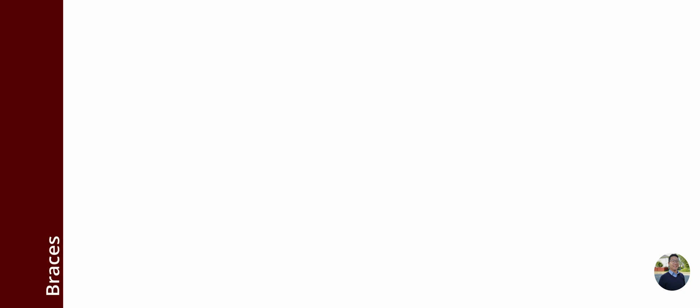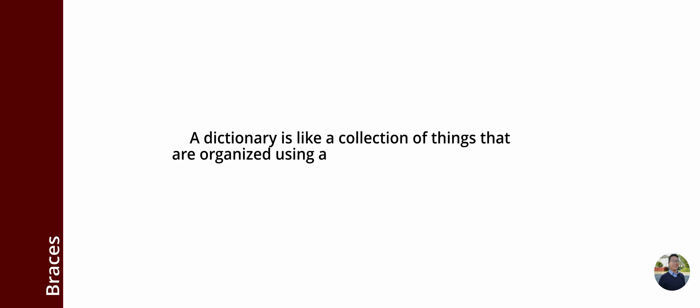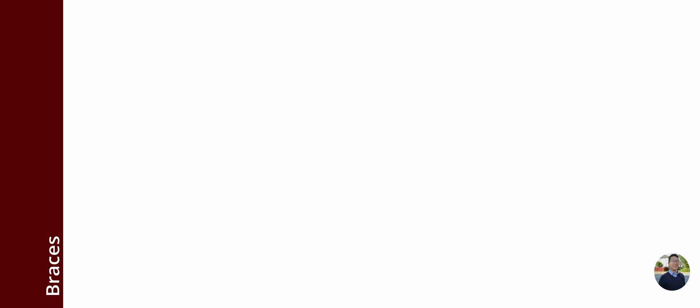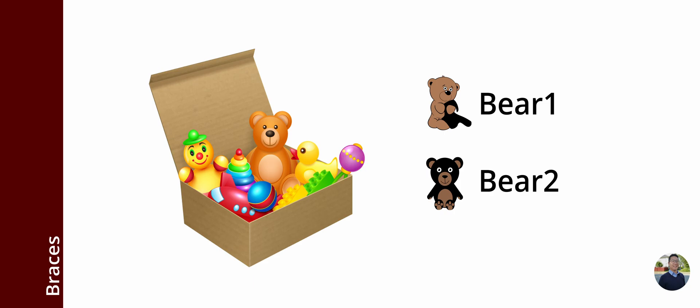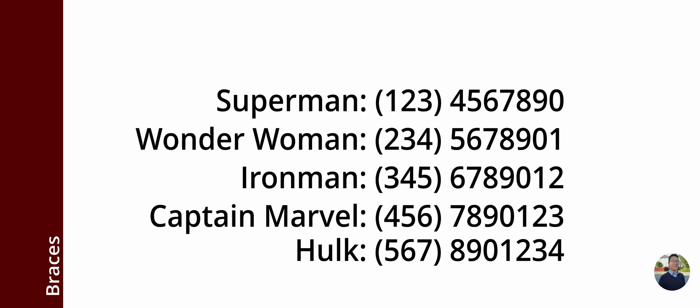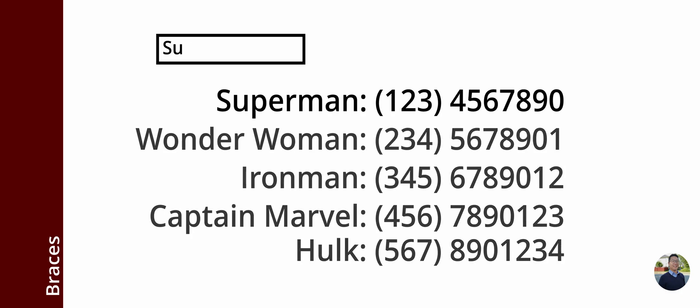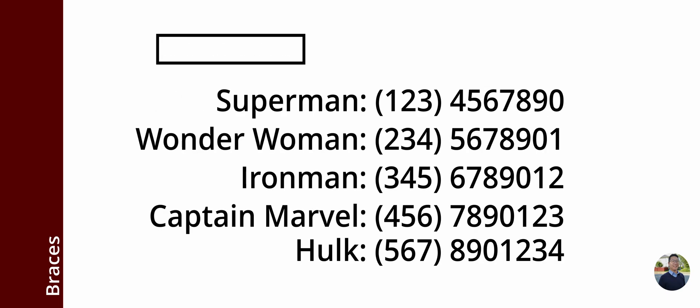Braces are used to make a dictionary. A dictionary is like a collection of things organized using a special word called a key. Imagine you have a toy box with a bunch of toys inside — each toy has a special label or name called a key, and you can use this key to find the toy you want. For example, a program might use a dictionary to store names and phone numbers, using the name as the key to look up a phone number.